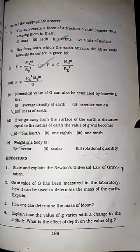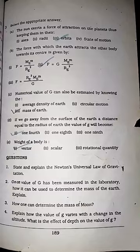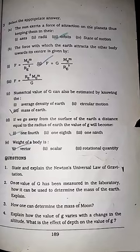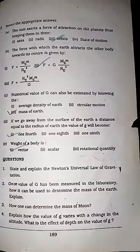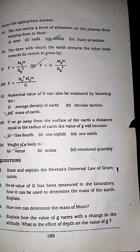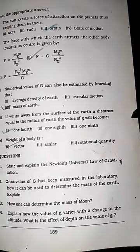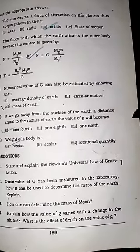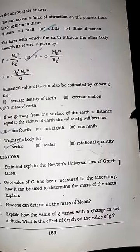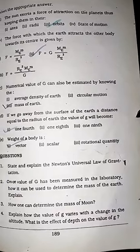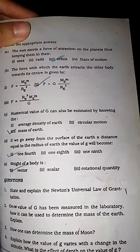MCQ number D: If we go away from the surface of the earth a distance equal to the radius of earth, the value of g will become... Remember that if we go from the surface of earth a distance equal to the radius of earth, then the gravity becomes one fourth.